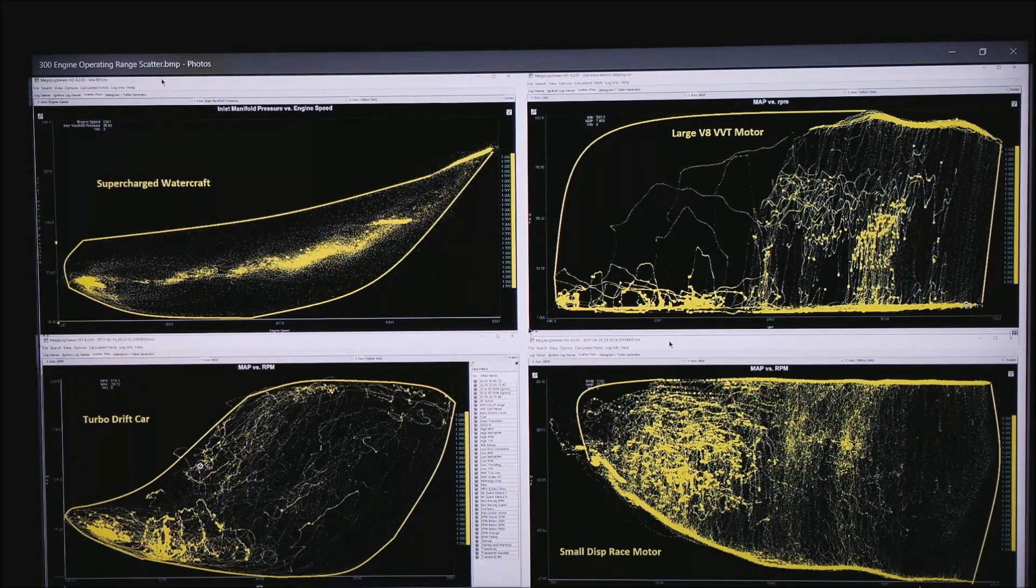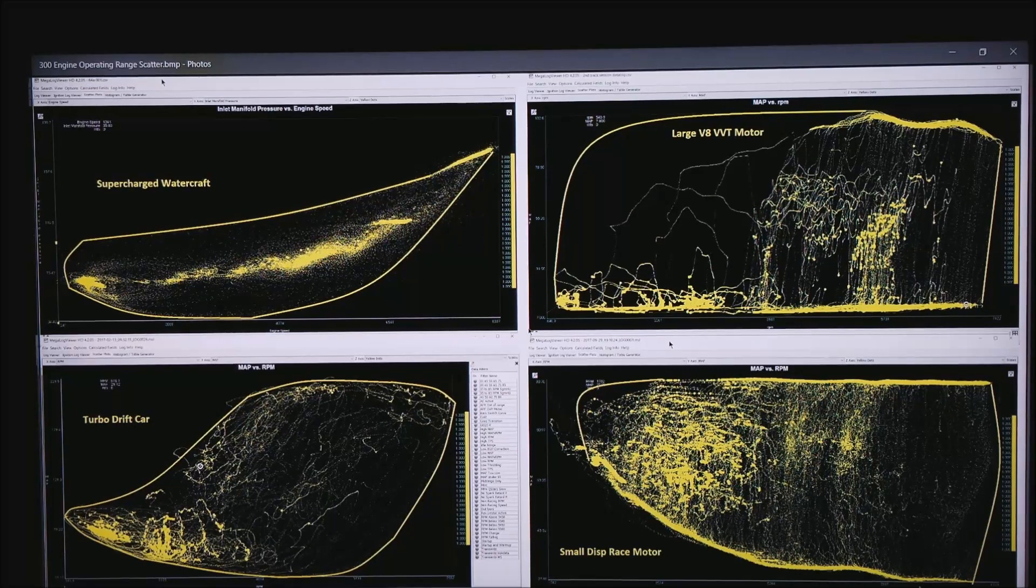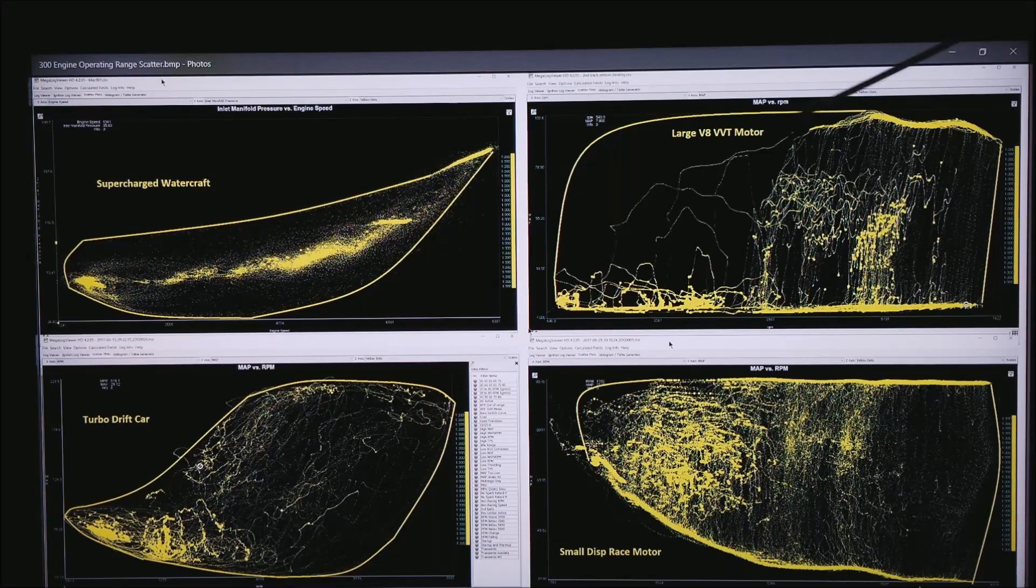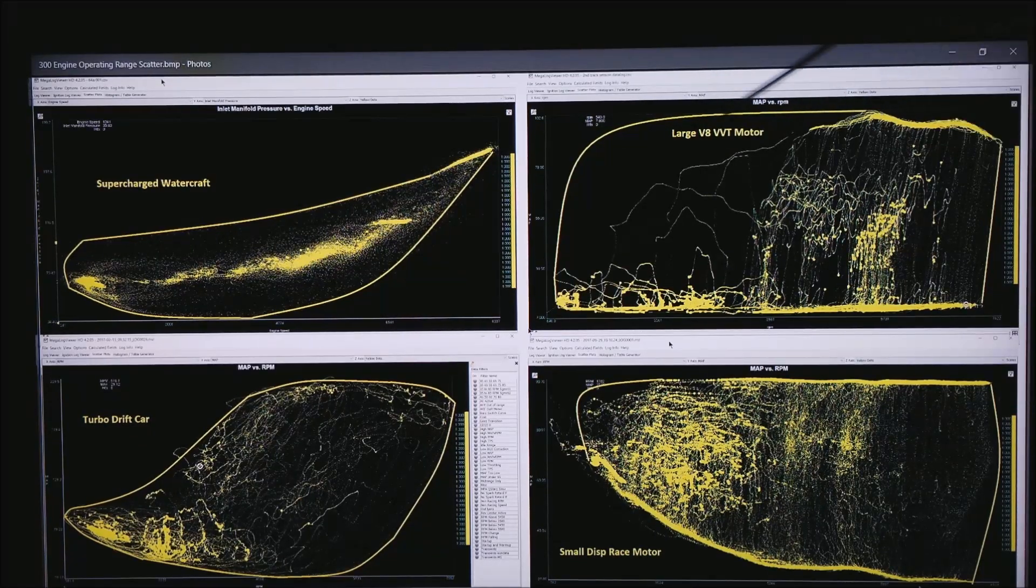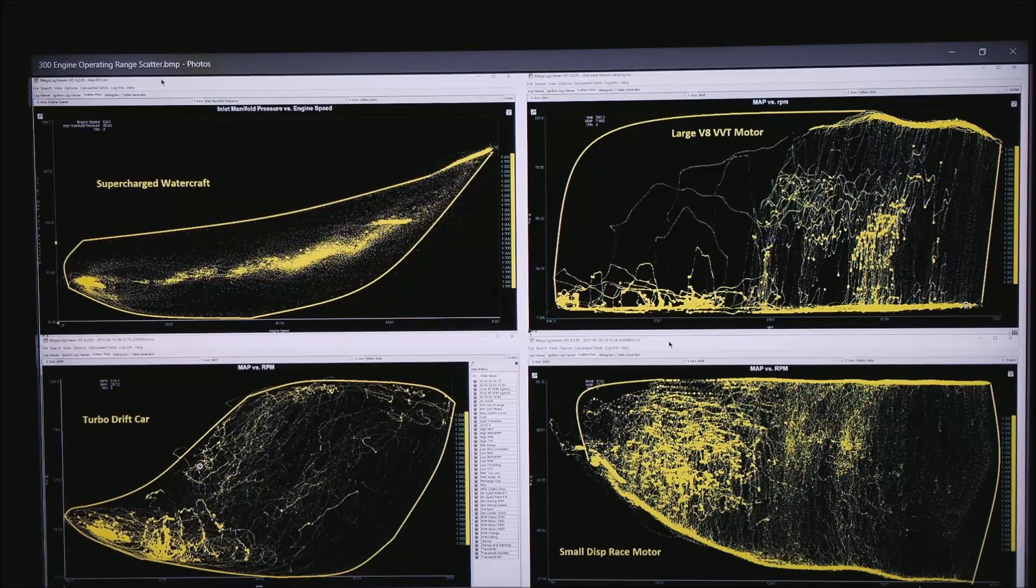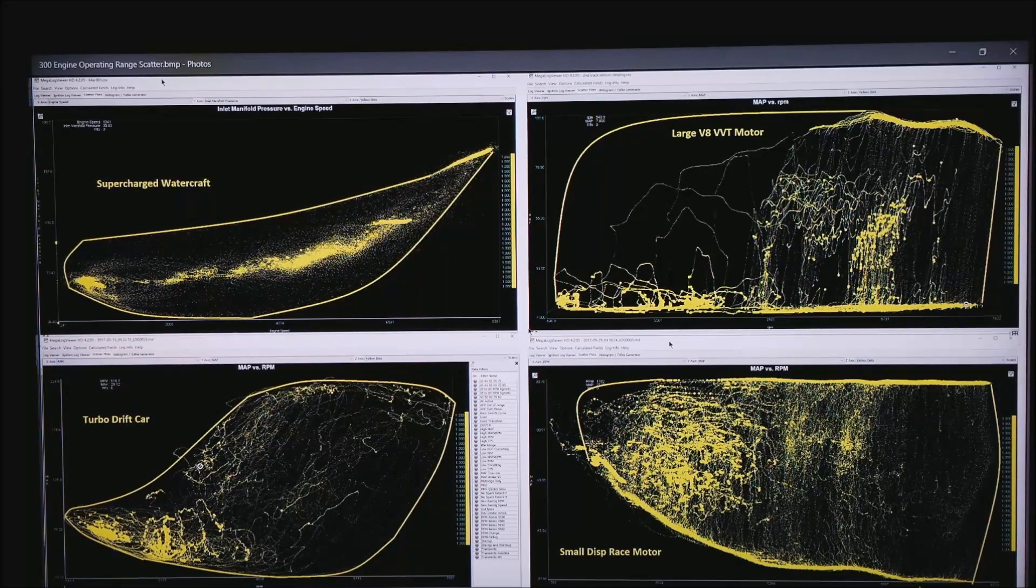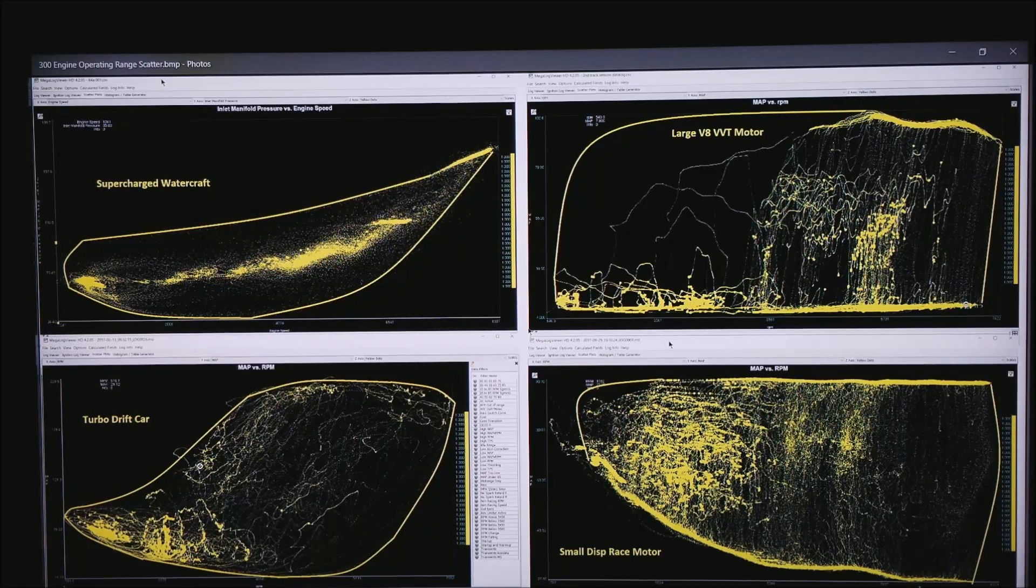On the top right happens to be a large variable valve timing V8 motor. This happened to be a Ford motor race car that I got the data from. Notice how he has almost no data up in the upper left. You could get to 100 kPa but because it's such a torquey motor driving around the pits he never gets there.